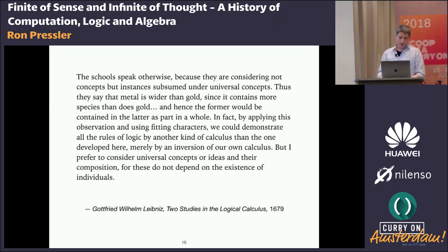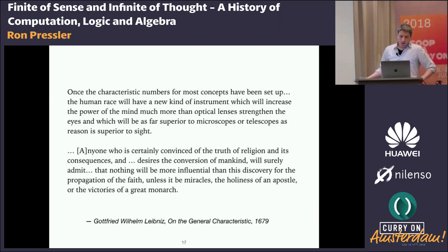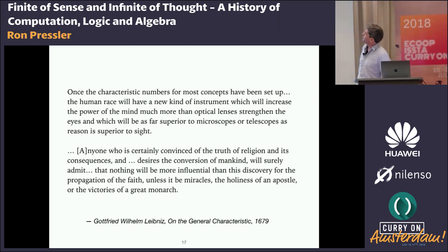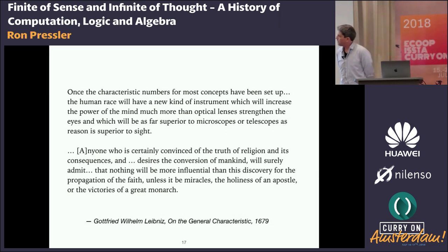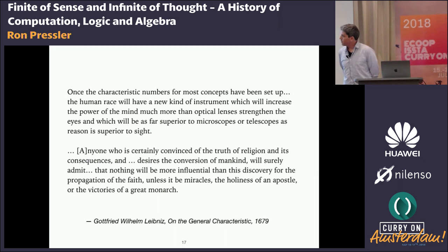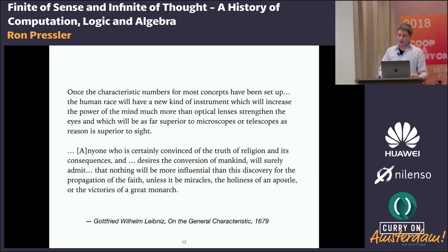He noted that some would prefer to encode the individuals of sets, and this way the composition by multiplication would be union, and everything would just be inverted. Fans of category theory may note that he was not a fan of representing individual members of sets — he didn't want to rely on individuals. Once the characteristic numbers for most concepts have been set up, Leibniz wrote that 'the human race will have a new kind of instrument which will increase the power of the mind much more than optical lenses strengthen the eyes, and which will be as far superior to microscopes or telescopes as reason is superior to science.'